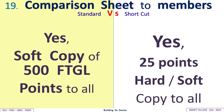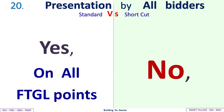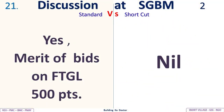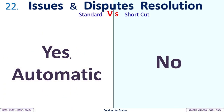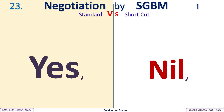Presentation by all bidders: Standard requires yes — presentations on all FTGL points; shortcut does not require presentations. Discussion at SGBM: Standard includes merit review of bids on all 500 FTGL points; shortcut has nil discussion. Issues and disputes resolution: Standard — automatic resolution; shortcut — none. Negotiation by SGBM: Standard — yes; shortcut — nil.